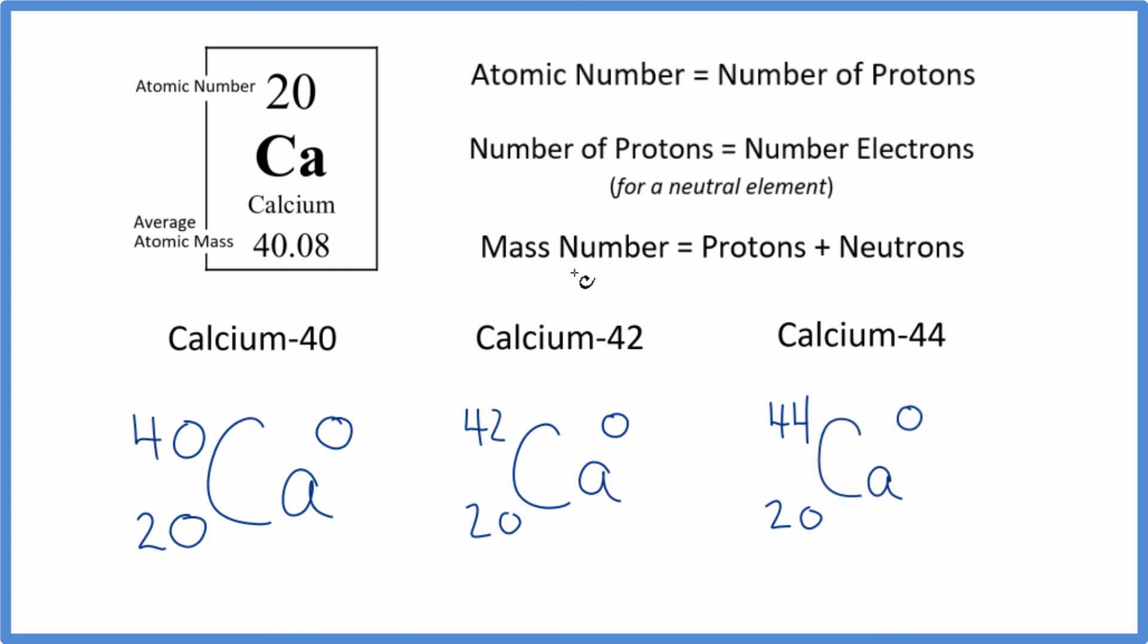One last thing. If you have a sample of calcium, most of it's going to be this calcium-40 isotope right here. We know that because when we go to the periodic table, the average atomic mass, that's an average of all these isotopes, their masses based on how much there are in the sample by their abundance.